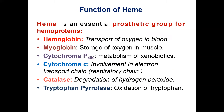Heme has a variety of functions. It is an essential prosthetic group for hemoproteins such as hemoglobin, myoglobin, cytochrome P450, cytochrome C, the enzyme catalase, and tryptophan pyrrolase.